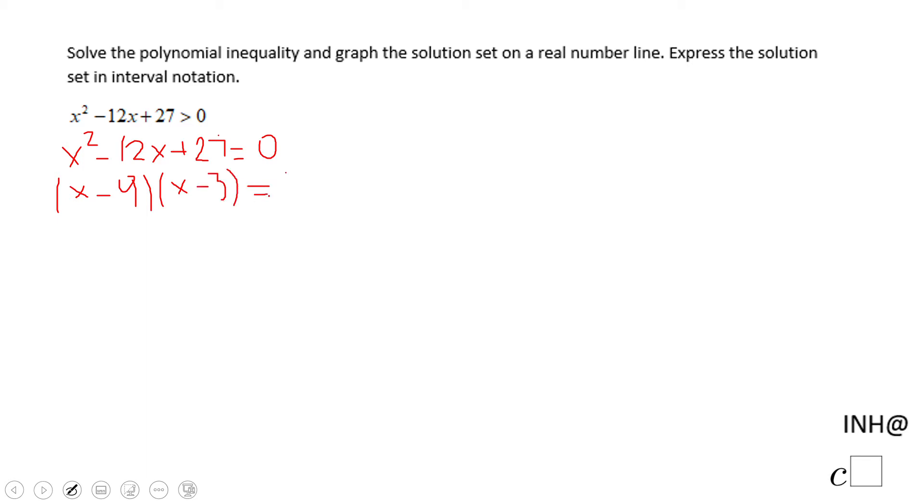We can use the zero product property and we have x minus 9 equals 0, which gives us x equals 9, and x minus 3 equals 0, which gives us x equals 3.